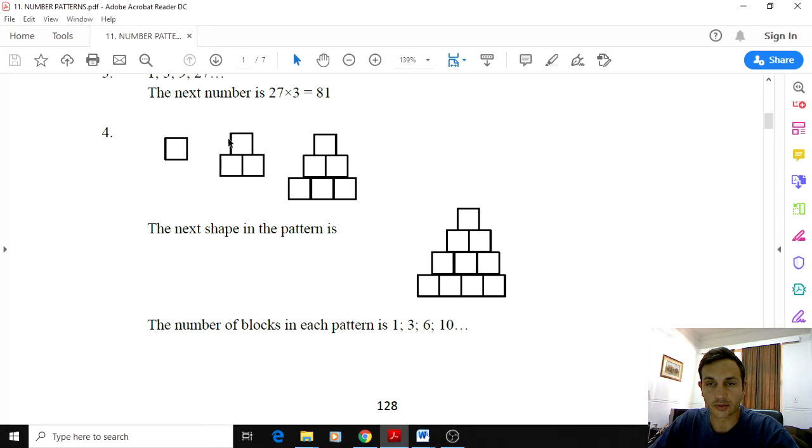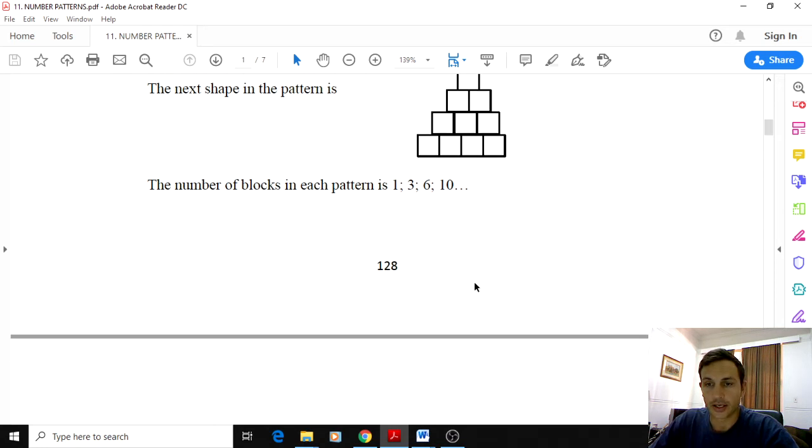Here we just have a pattern involving shapes. So here we have these 3 shapes here. You see that you'll be adding 2 here. Going from 1 square to 3 squares you have to add 2. From 3 squares to 6 squares you have to add 3. So you added 2, you added 3. The next one you're going to add 4, and then the one after that you're probably going to add 5.